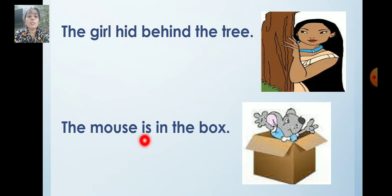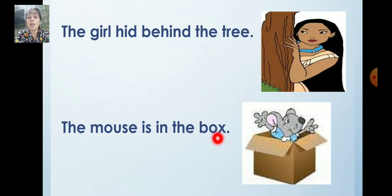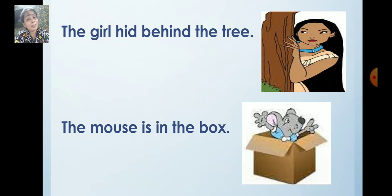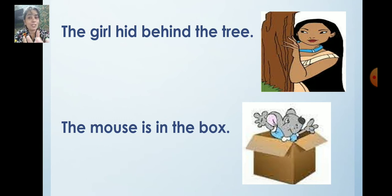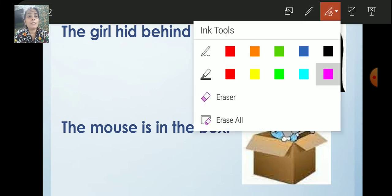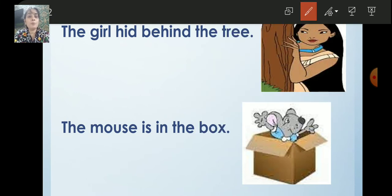The mouse is in the box. Now where is the mouse? In the box. Where are your balls? In the bag. Where are you sitting? On the bench. So the position words — they show the positions. Those words are called prepositions.